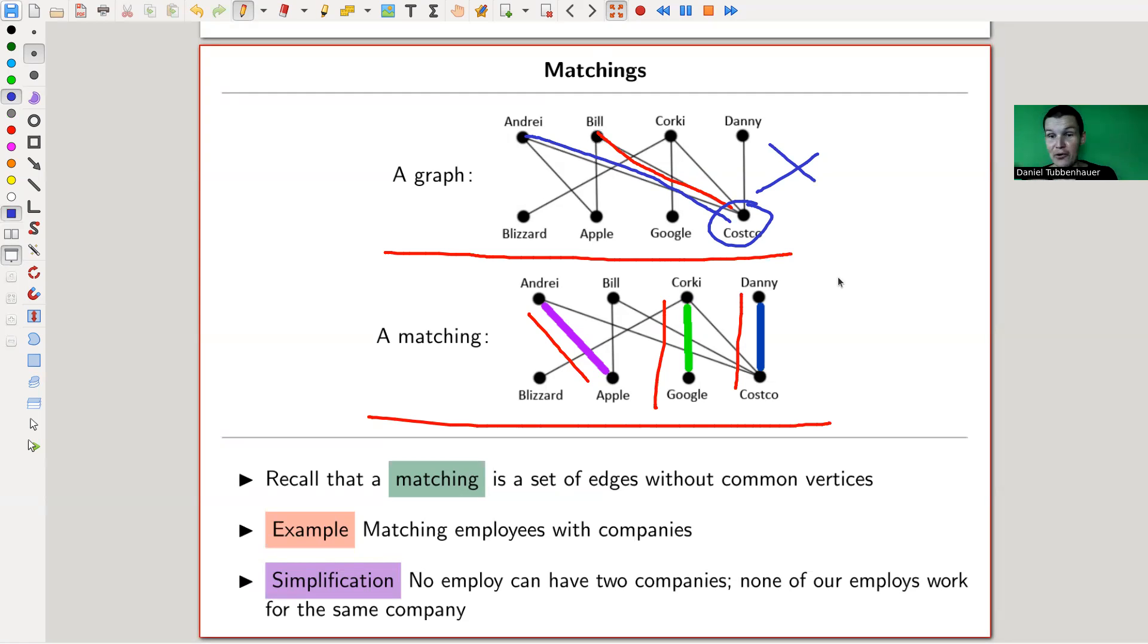I should have called them A, B, C, D. I'm sorry. So I have person A, I have person B, I have person C, I have person D. And they are kind of, let's say, they're employees at certain companies. So I have company B, I have company A, I have company G, and I have company C. And the matching is just who works for who, for what company.